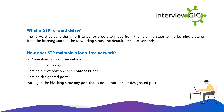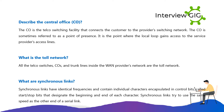How does STP maintain a loop-free network? STP maintains a loop-free network by electing a root bridge, electing a root port on each non-root bridge, electing designated ports, and putting into the blocking state any port that is not a root port or designated port.